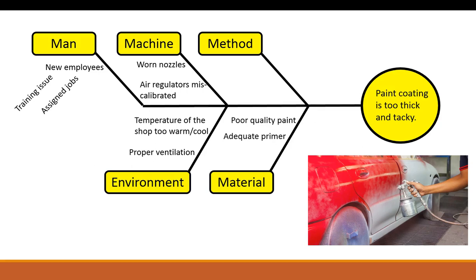Under material: poor quality paint causing issues with not drying properly, or the coating coming out too thin or too thick. Maybe there's an issue with primer — if the primer applied to the body of the car isn't right, the paint won't set up properly. Under method: do we have a standard procedure? If people don't have a procedure to follow, that might tie right into the manpower issue and training. Is there a procedure that we can actually follow and say this is a good procedure? Maybe we need to go back, review it, and potentially standardize it.